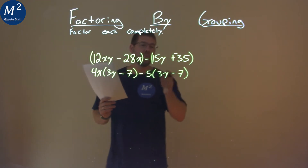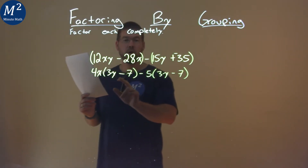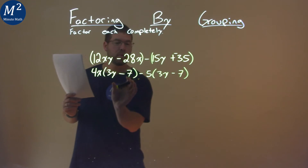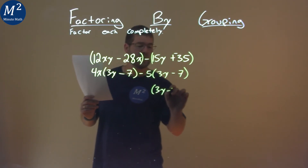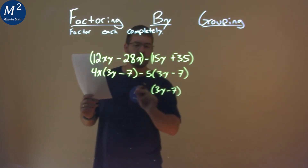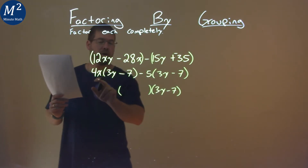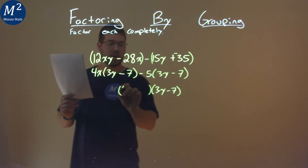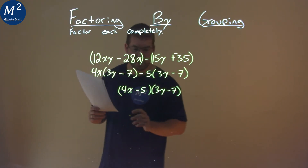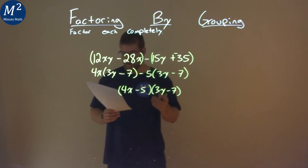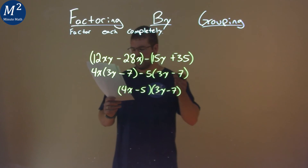The 3y minus 7 is familiar — we've seen that in both parts right here. So I can pull out a 3y minus 7 from both parts, and what we're left with is multiplied by the numbers in front of each one: 4x minus 5. So my final answer is (4x minus 5) times (3y minus 7).